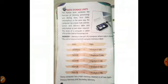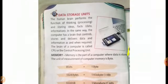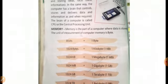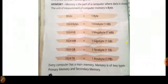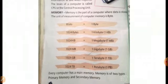Our fourth one is Data Storage Units. The Human Being performs the functions of Thinking or Processing and Storage of Ideas and Facts. In the same way, the computer has a brain that controls, stores and delivers data and information as and when required. The Brain of the Computer is called CPU or the Central Processing Unit. The data is stored in the Memory.